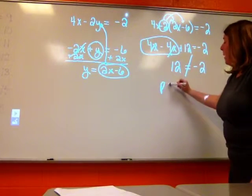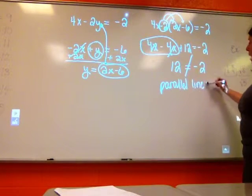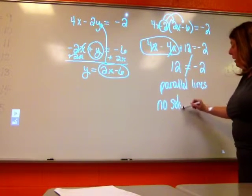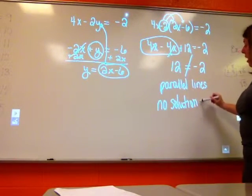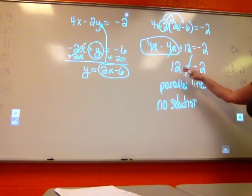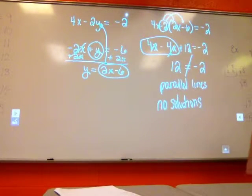That means we have parallel lines. Parallel lines have no solution because parallel lines will never cross. What we're looking for is the point where they cross, and these would never cross because these aren't equal to each other. Therefore, they're parallel lines with no solution.